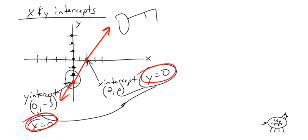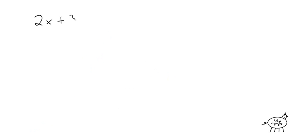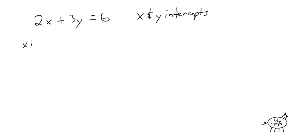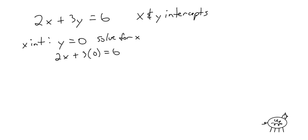Let's start with a nice, friendly problem. If I give you 2x plus 3y equals 6, and I ask you to find the x and y intercepts. For the x-intercept, you set y equal to 0 and solve for x. So: 2x plus 3 times 0 equals 6. The 3 times 0 cancels, leaving 2x equals 6. Divide both sides by 2, so x equals 3.